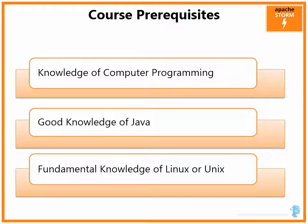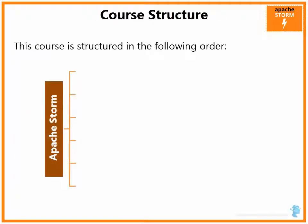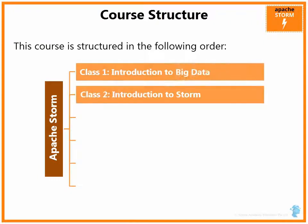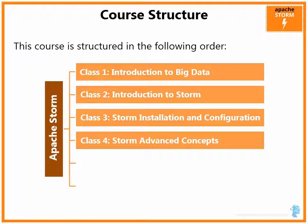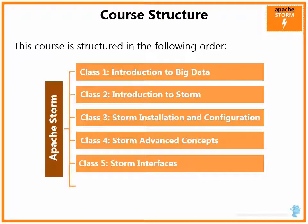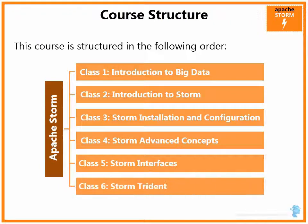Let us look at the course structure. The Apache Storm course will have six classes. Classes 1 and 2 provide an introduction to Big Data and Apache Storm respectively. In Class 3, you will learn installation and configuration of Storm. Class 4 will cover advanced concepts. Class 5 will take you through the Storm interfaces and Class 6 will explain the Trident extension to Storm.